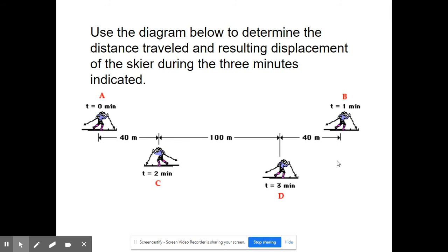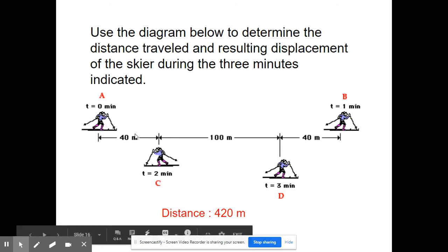When you add them all together you should be getting 420 meters. But the displacement, remember, is different. Final position minus initial position. D minus A. Well we can see that's a difference of 140 meters. And he traveled 140 meters to the right. Okay, so that under there it says 140 meters to the right.